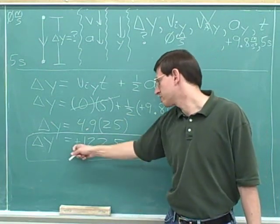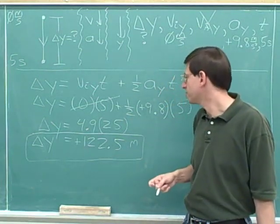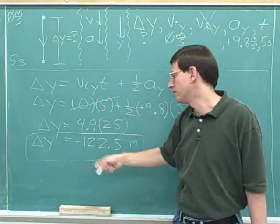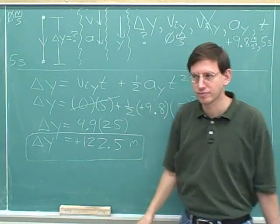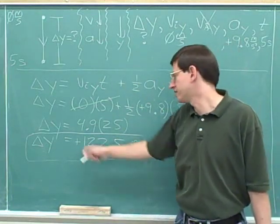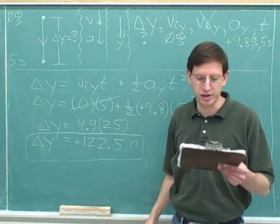Someone can look at this and say, oh, displacement positive 122.5 meters. Oh, I see this person chose down as their positive direction. So I know that the displacement is downward. If you don't tell somebody what your positive direction is, then it's meaningless to tell them what the sign is because they don't know which direction is positive.